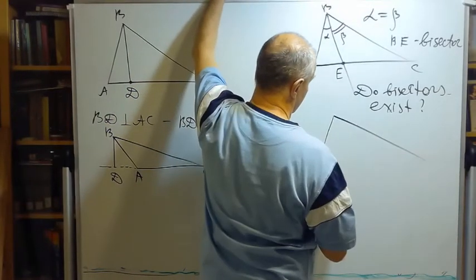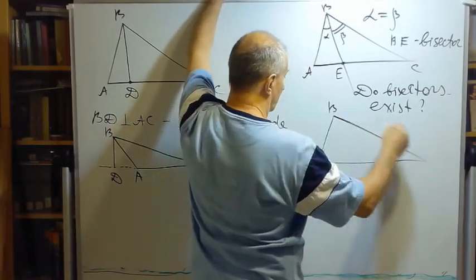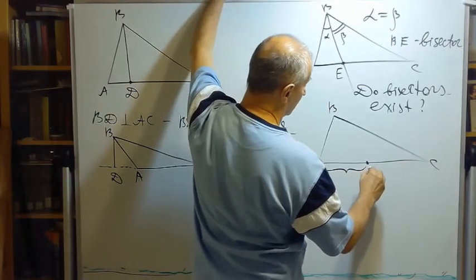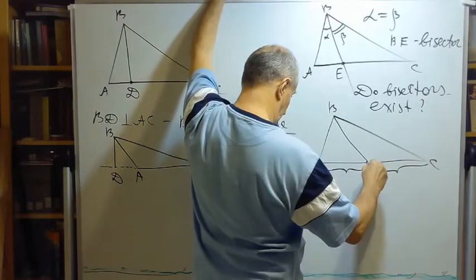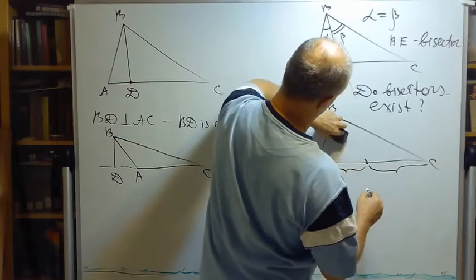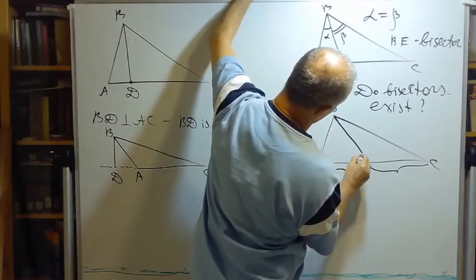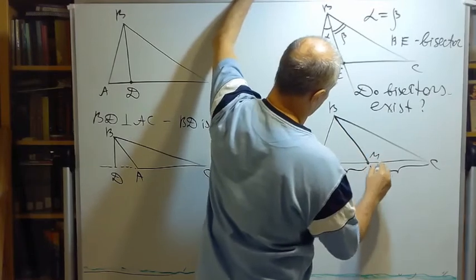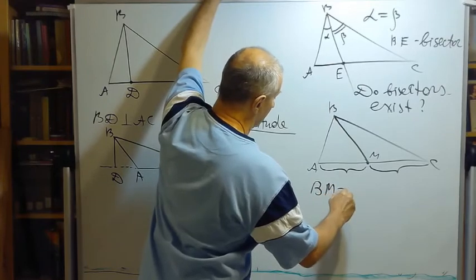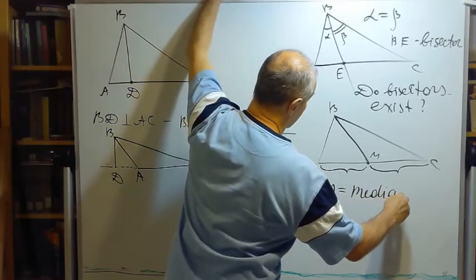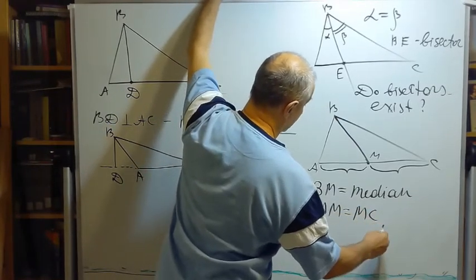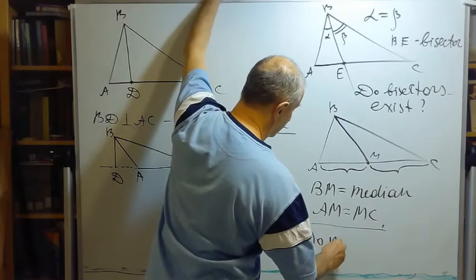And a similar story with another segment: A, B, C that splits the opposite side into two congruent segments. I call it - oh, it must be a straight line of course. I will call it BM. And this segment is called BM. It's called the median, if AM is congruent to MC. Do medians exist?